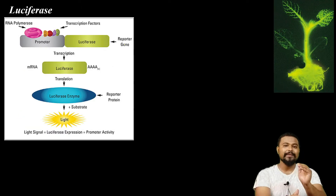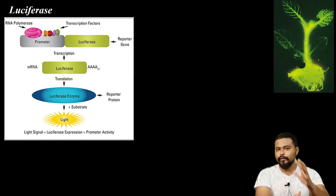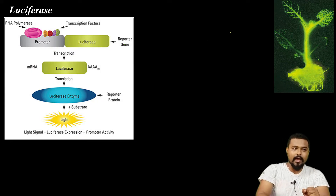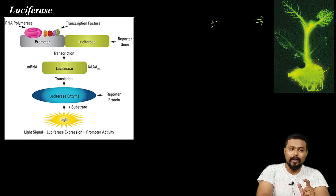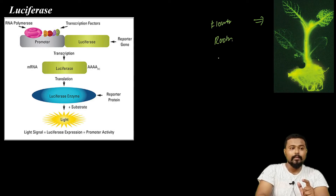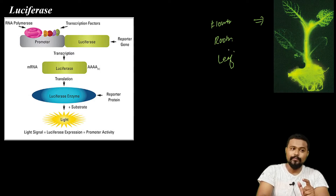For the Luciferase reporter gene, I will apply it as an example. I will show you the plant — its flower, roots, and leaf. These are the three organs we will consider.